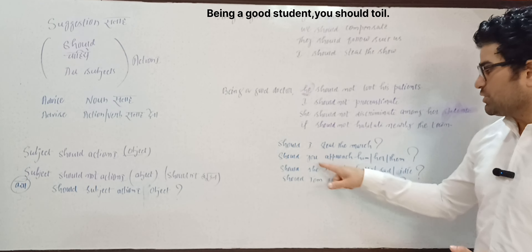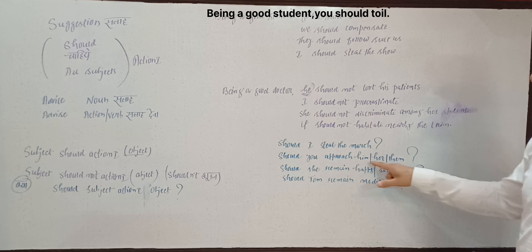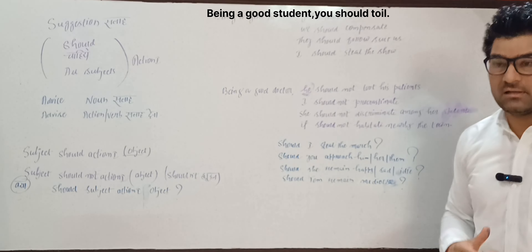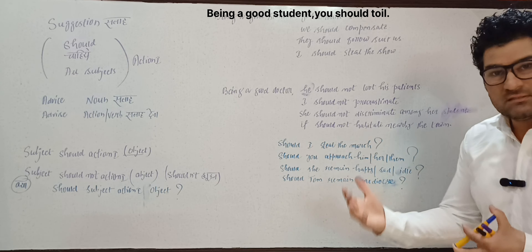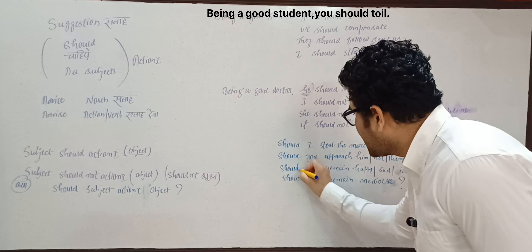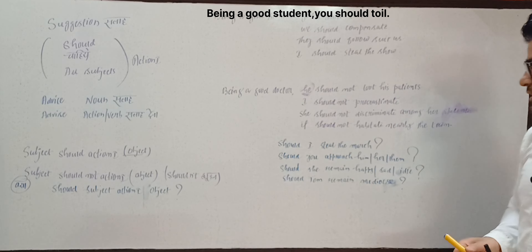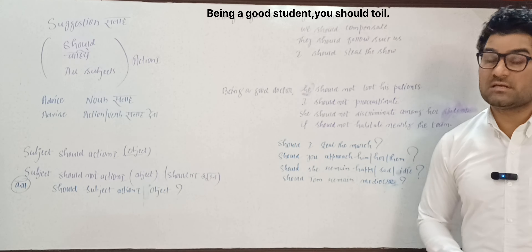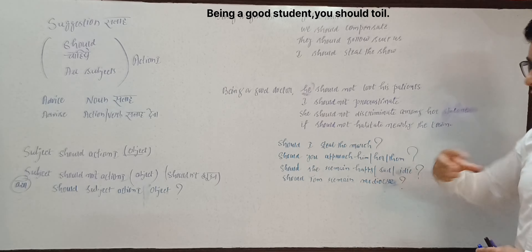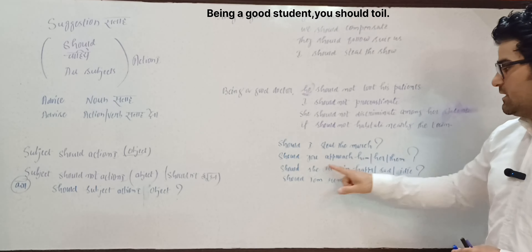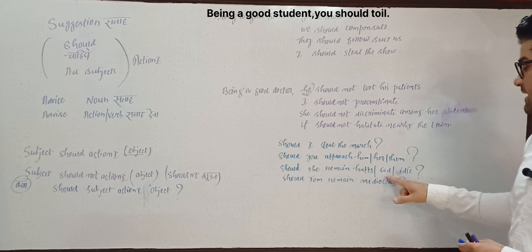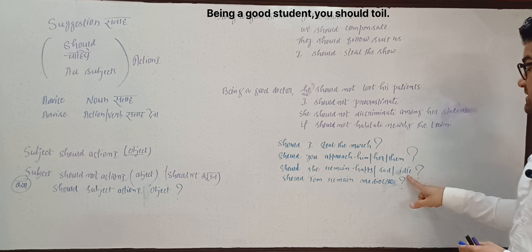Third question example: 'Should she remain happy?' — 'remain' is a useful word meaning to stay in a certain state or condition. For example: 'Should she remain happy?' 'Should she remain sad?' 'Should she remain idle?' — idle means doing nothing, being lazy or unproductive.